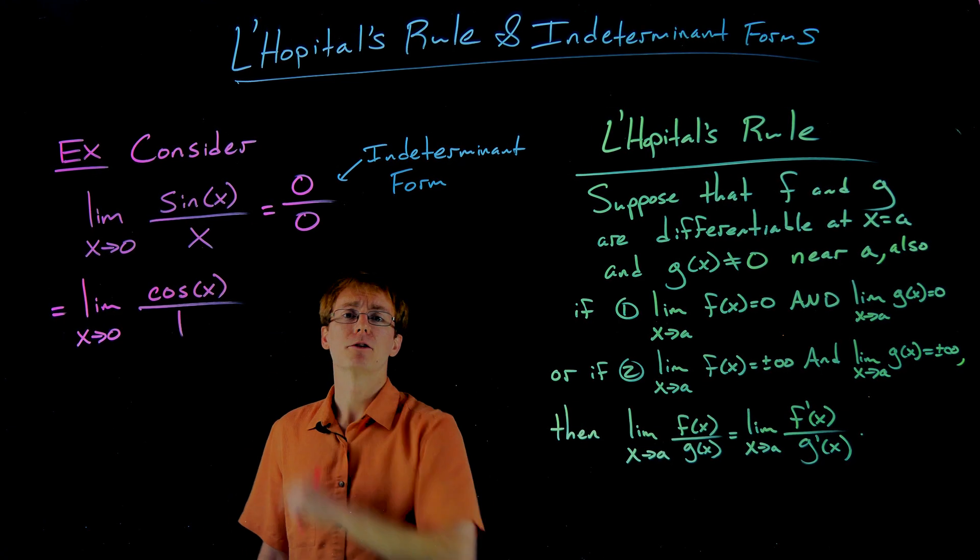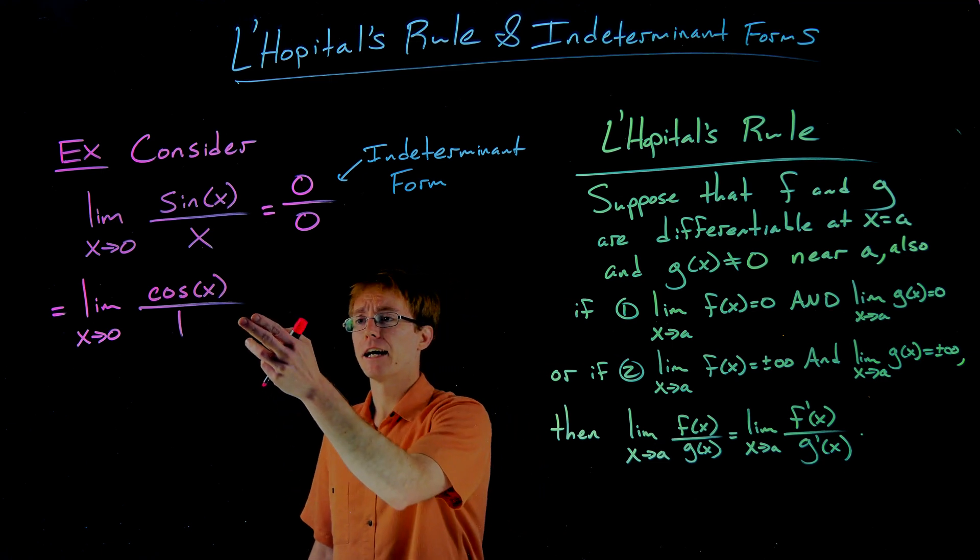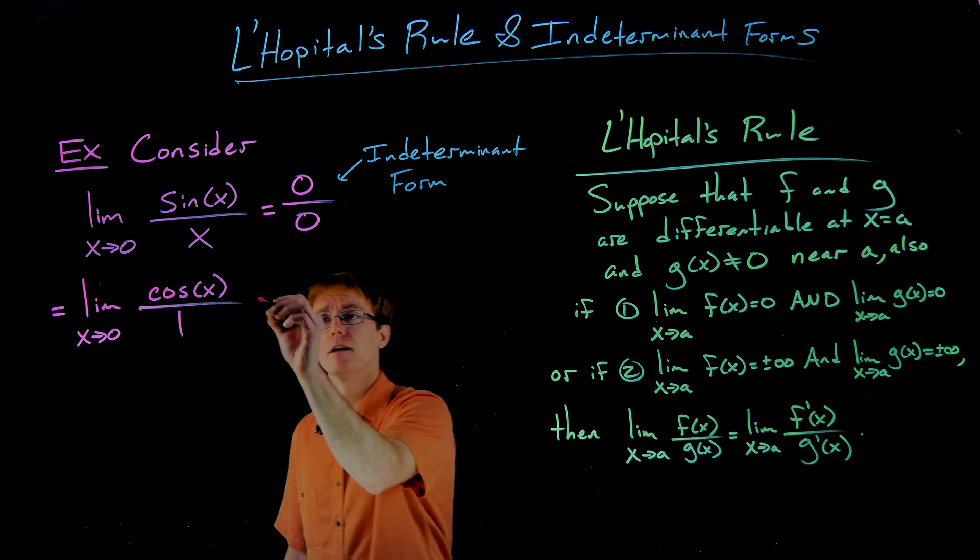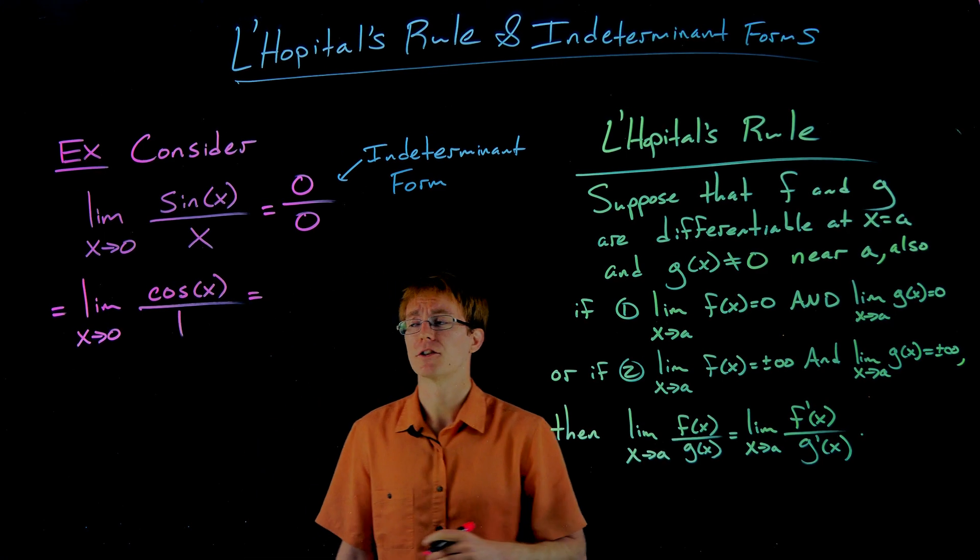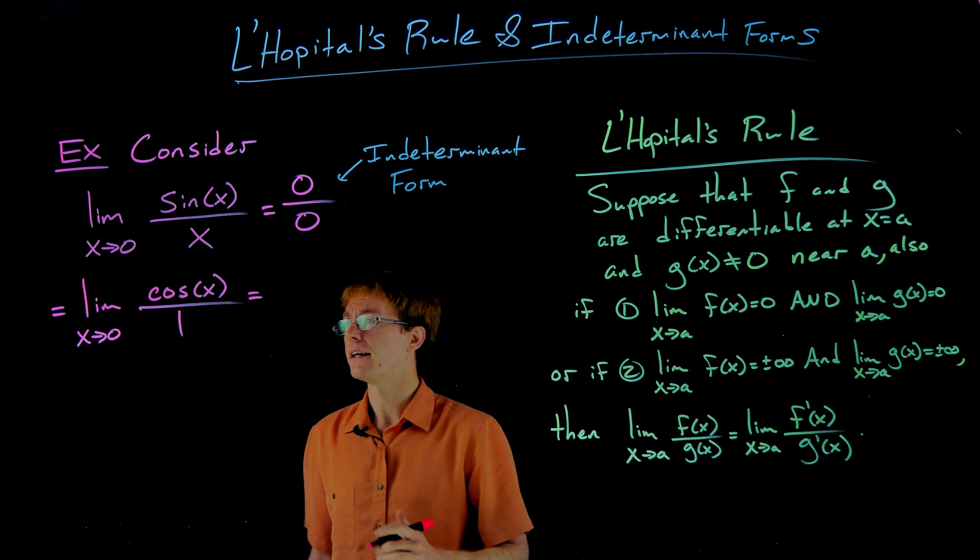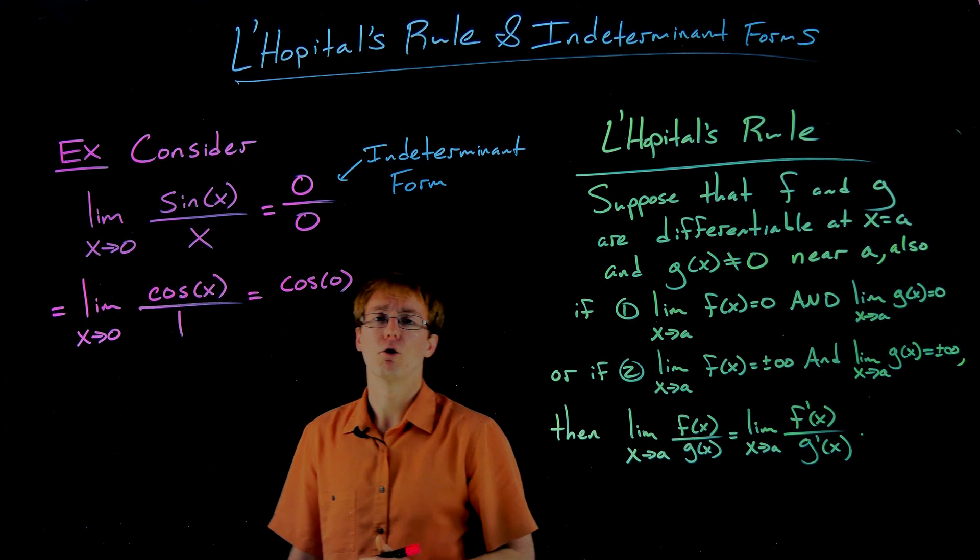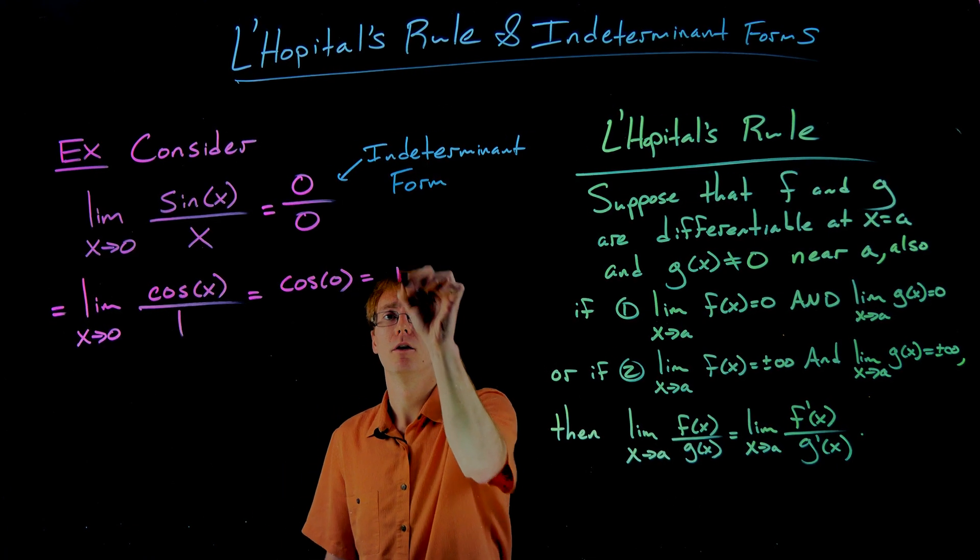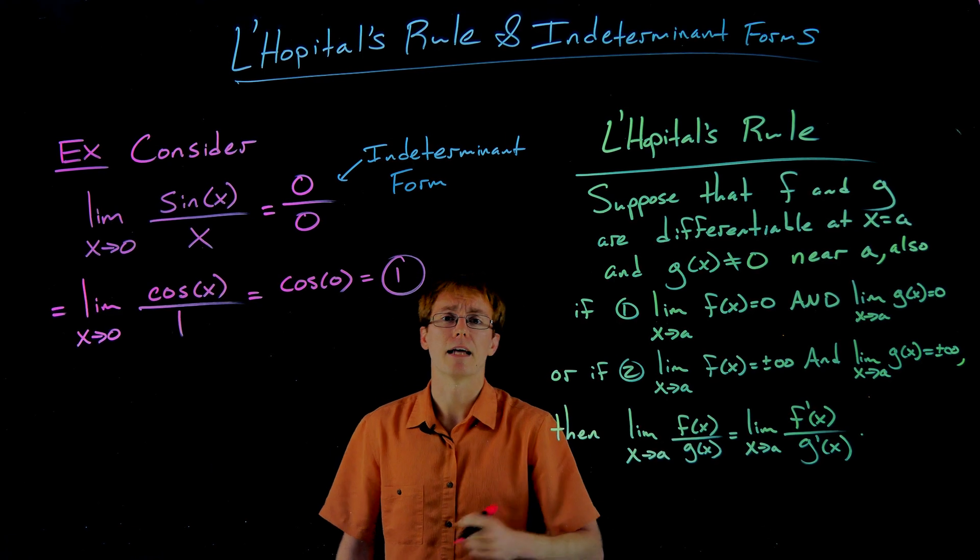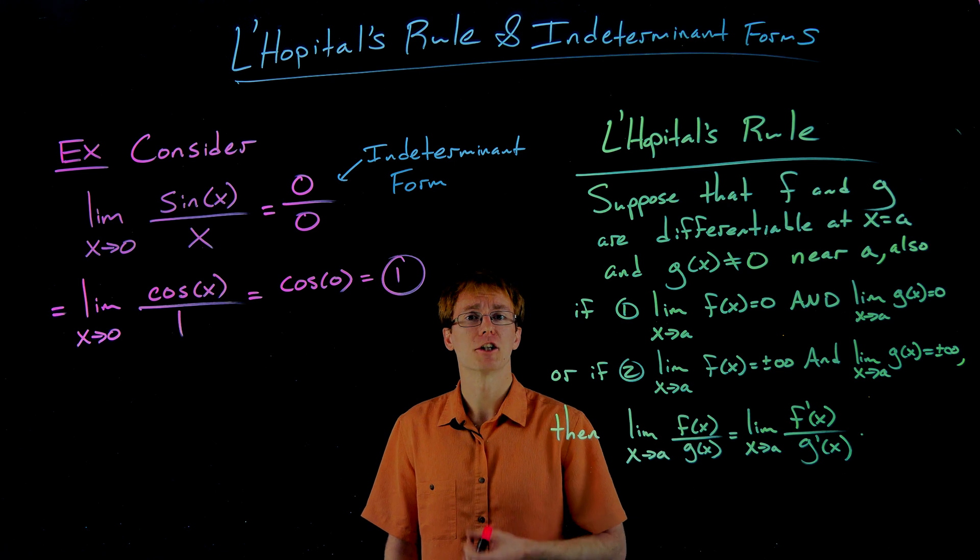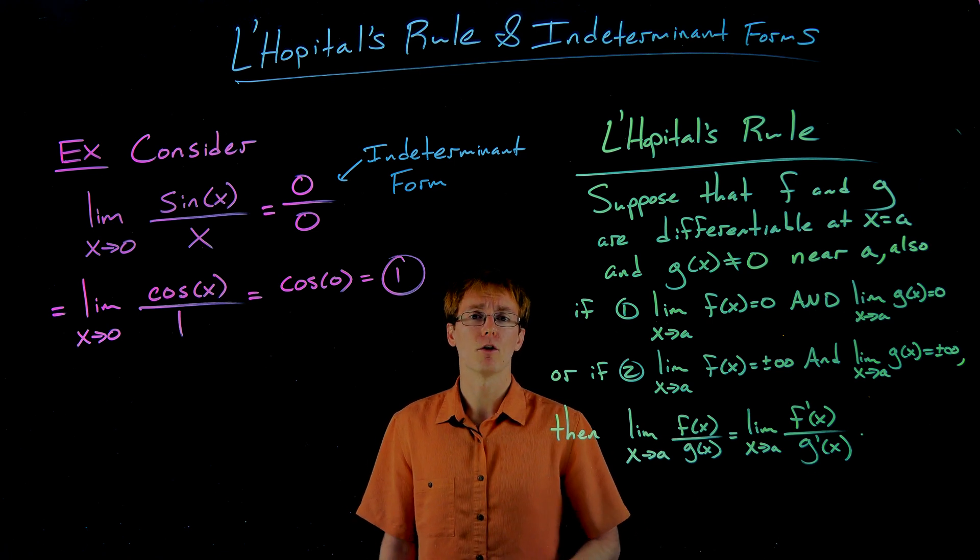And now by L'Hopital's rule, these two limits are equivalent, and the idea here is we can actually evaluate this new version of our limit. We can evaluate this just using direct substitution. If we plug in x equals zero, this simplifies to cosine of zero over one or just cosine of zero, which is equal to exactly one.